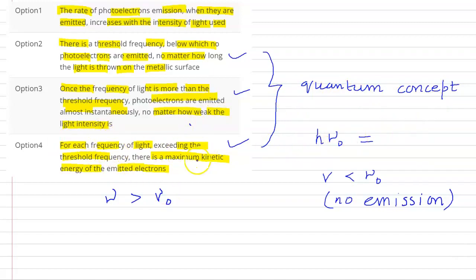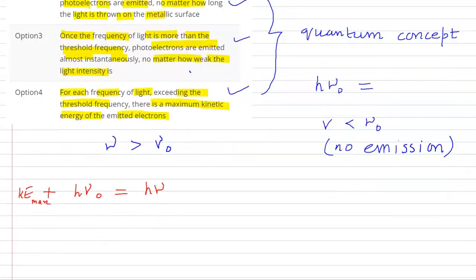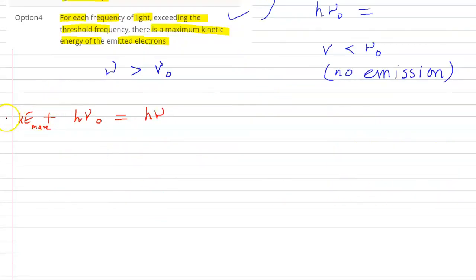Fourth, for each frequency of light exceeding the threshold frequency there is a maximum kinetic energy of the emitted electrons. Using quantum mechanic relation, we have h*nu_0 plus KE_max is equal to h*nu, where nu is the frequency of light that we are giving, h*nu_0 is the phi that is the work function of the matter.